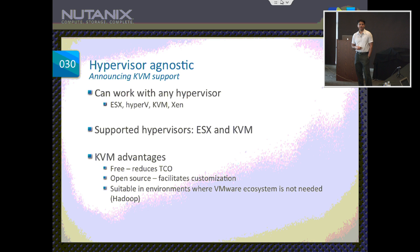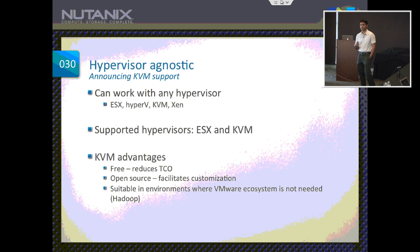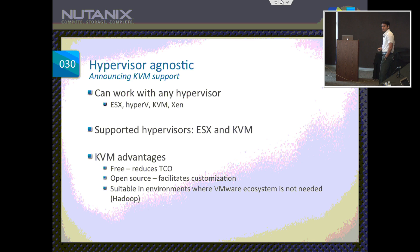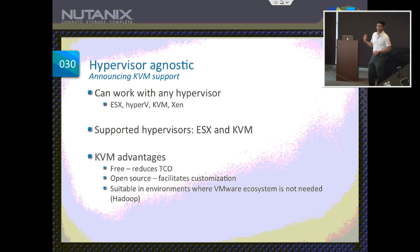The next feature is that we are hypervisor agnostic. Referring back to the architectural diagram, there is nothing in our architecture that relies on ESX specifically. We can run with ESX, Hyper-V, KVM, Xen — anything you like. For the last three years we've been working with ESX. Now I'm also proud to announce support for KVM. The advantages of KVM are that it's free — lower cost of ownership — and it's open source so people can tinker with it. It's suitable in environments where the full VMware ecosystem isn't needed, for example running big data computations where you don't want vMotion and don't want to pay VMware licensing.